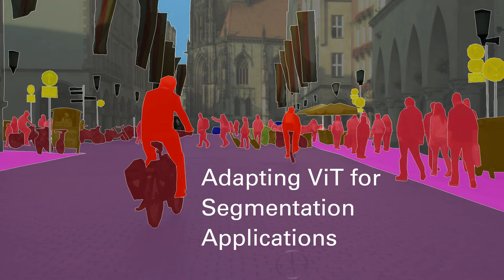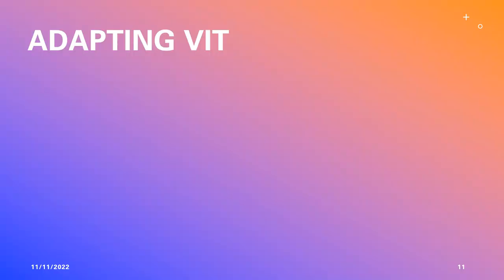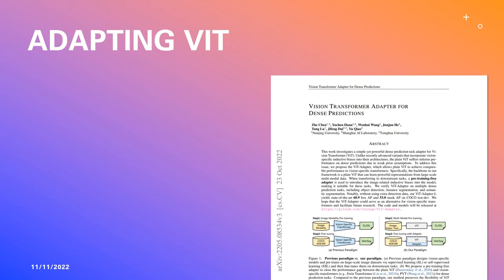Adapting Vision Transformers for segmentation applications: the paper 'Vision Transformer Adapter for Dense Predictions' by Chen et al. explores the use of VIT for dense prediction tasks by using an external, training-free adapter that introduces image-related knowledge to a pre-trained Vision Transformer. The goal of the paper was to close the gap between the classic VIT and vision-specific transformers for dense prediction tasks. The plain VIT commonly struggles with dense prediction tasks. Examples of vision-specific transformers include the SWIN transformer and the Pyramid Vision Transformer, which involve a modified form of the Vision Transformer specific to image inputs.